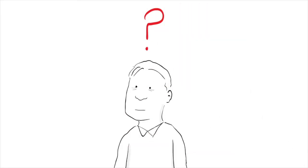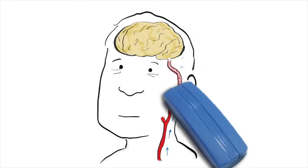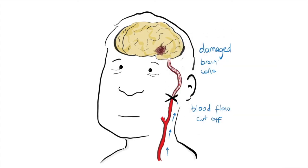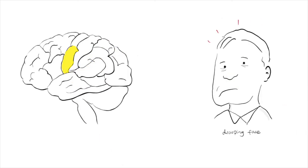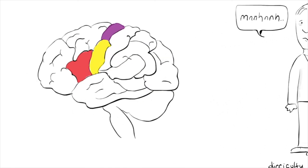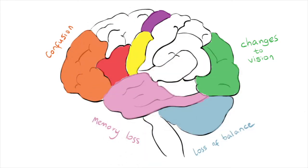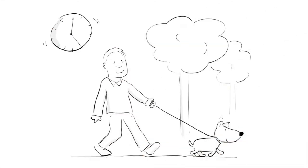A stroke happens when blood flow to the brain is cut off. When brain cells are starved of oxygen, they become damaged and the symptoms that follow are called a stroke. As the brain controls the whole body, the symptoms of a stroke can be wide ranging, depending on which parts of the brain are affected — causing drooping face, weakness in the arms or legs, or difficulty speaking. Other symptoms include changes to vision, loss of balance, confusion, and memory loss. Sometimes these changes can be reversed if treatment is started early — that's why it's so important to act quickly.